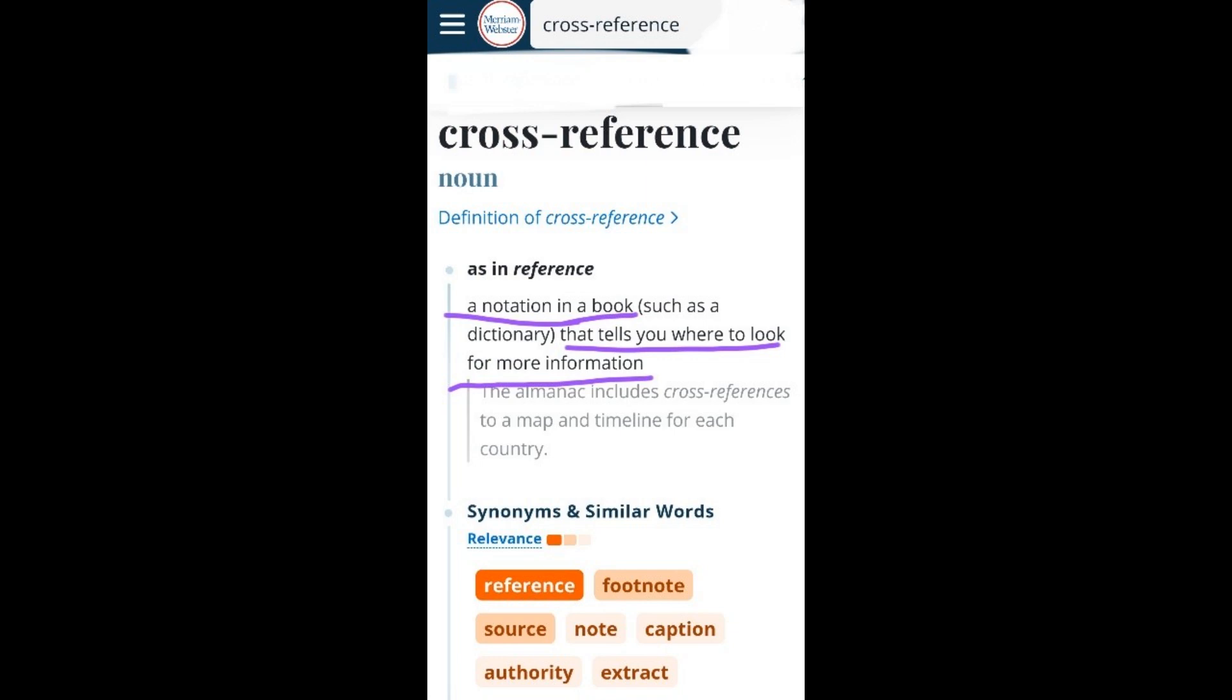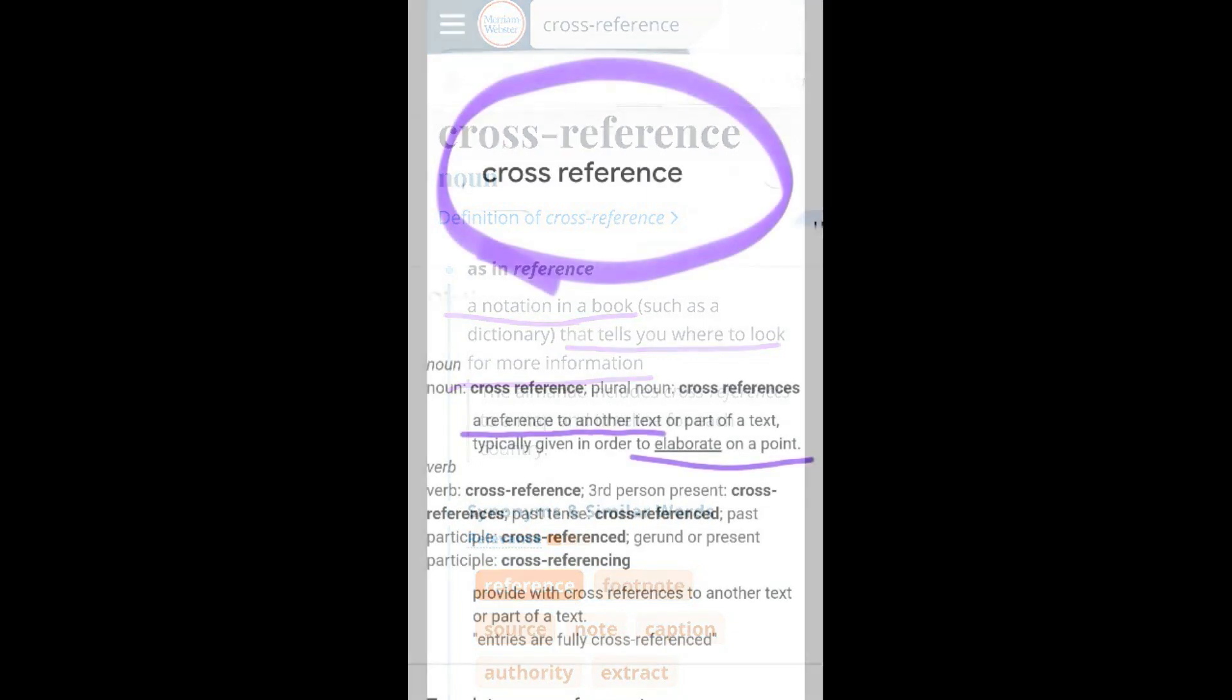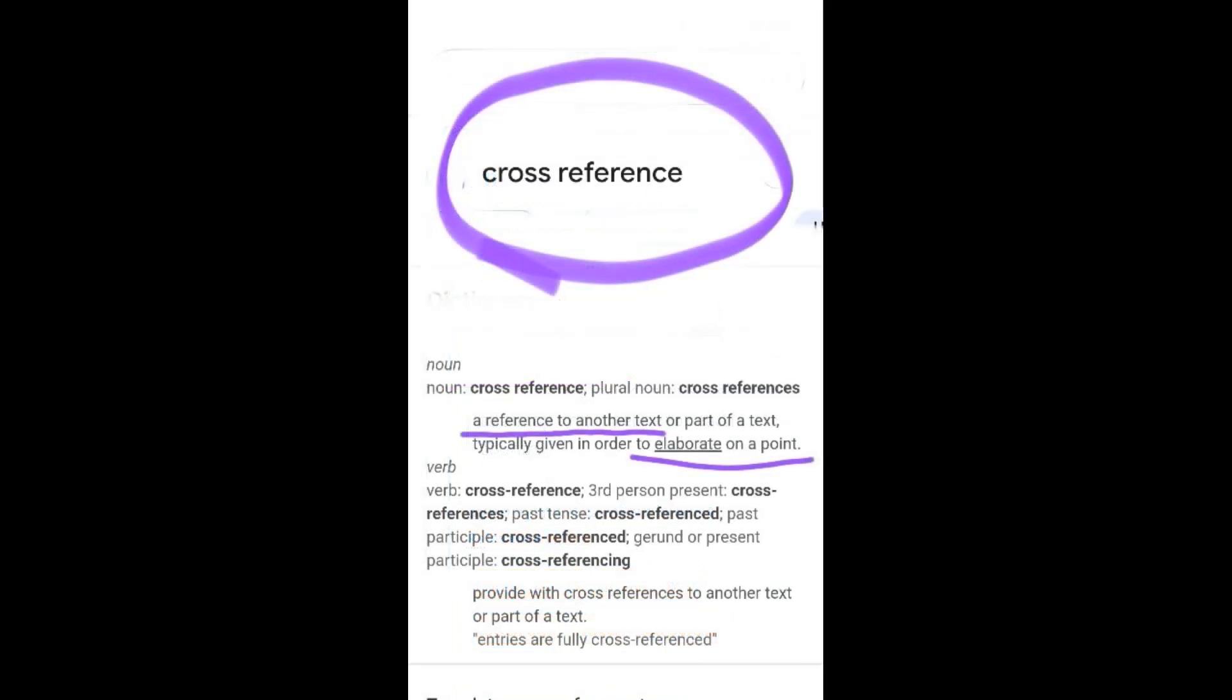A cross reference means a reference to another book or text in order to explain or elaborate on a point.